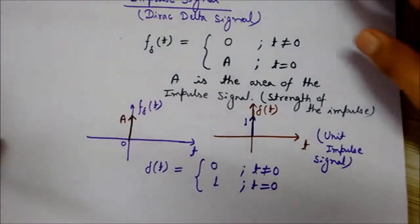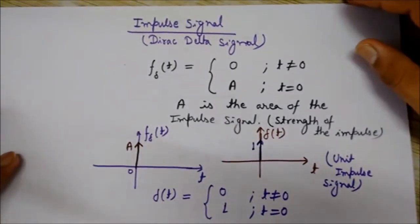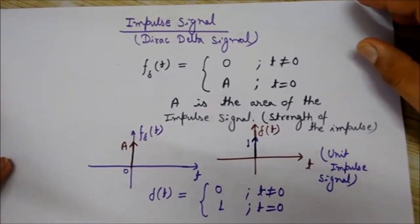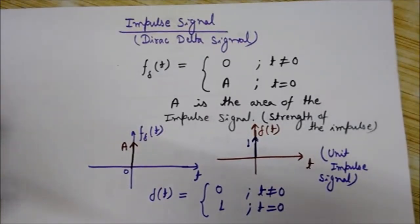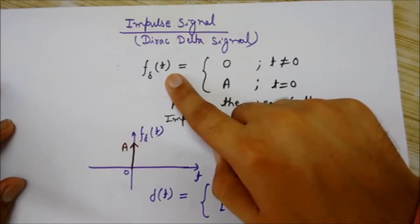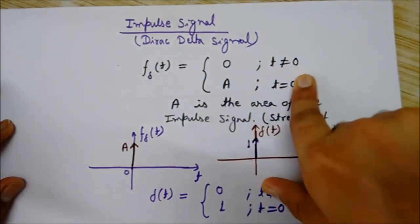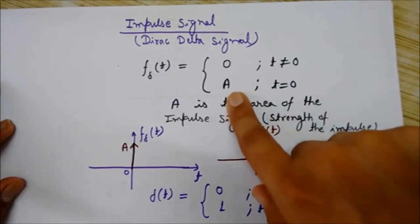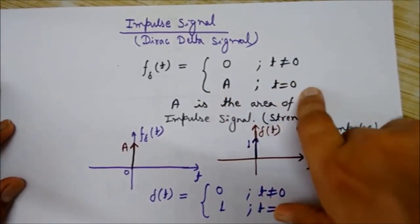Let's come to another kind of signal called the impulse signal. The impulse signal is also called the Dirac delta signal. We can write it as: delta(t) equals zero for t not equal to zero, and its value is equal to 'a' for t equals to zero.